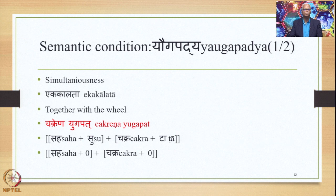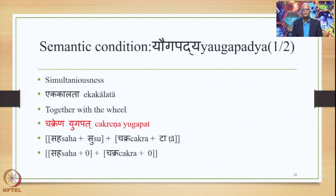Let us now move ahead and study the condition Yogapadya, which is Simultaneousness — Ekakalata — being in the same time zone. So when the meaning to be conveyed is 'together with the wheel,' the Laukika Vigraha is Chakraena Yogapath. The Alaukika Vigraha would be Saha plus Su plus Chakra plus Ta, where Saha denotes the sense of Yogapadya.